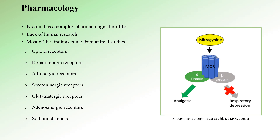Kratom's pharmacological profile is notably complex and currently not well understood. There is a substantial lack of human research, thus most findings come from animal studies. The current evidence indicates that both mitragynine and 7-hydroxymitragynine interact with a fascinating array of receptors and channels in the brain, including opioid receptors, dopaminergic receptors, adrenergic receptors, serotonergic receptors, glutamatergic receptors, adenosine receptors, and sodium channels.